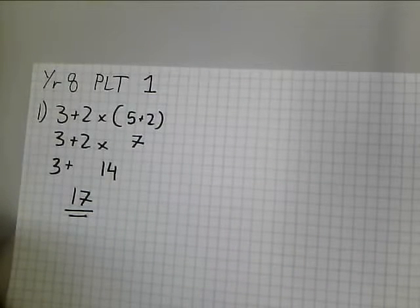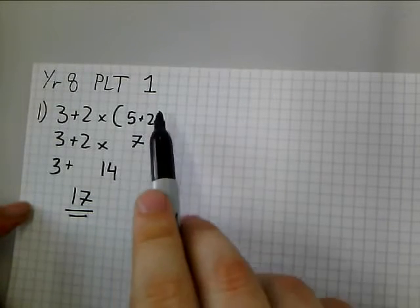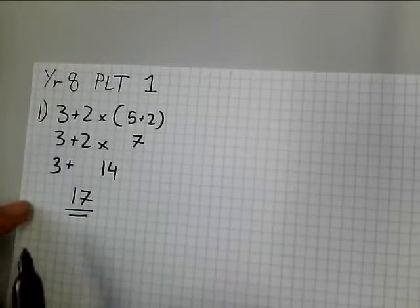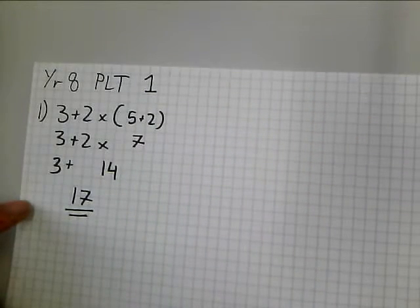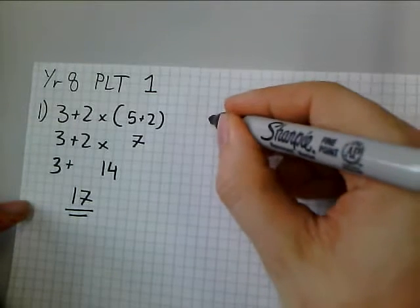And there's my final answer. Observe how I've set that out. There are no equal signs, but that's OK. I've evaluated my answer all the way, and I've got my final answer at the end there. Let's look at question 2.